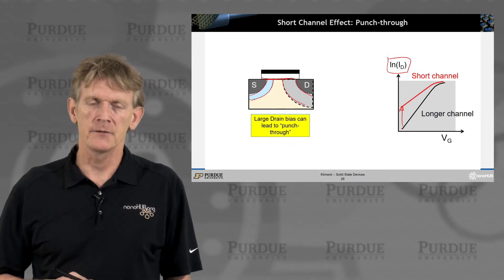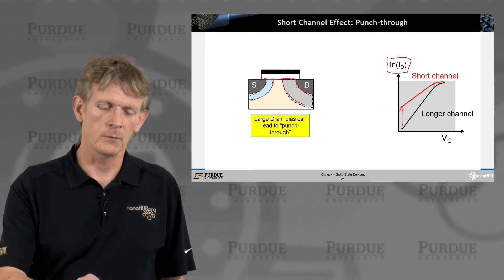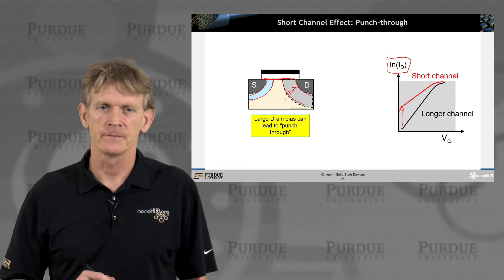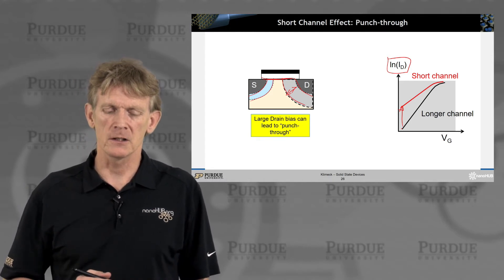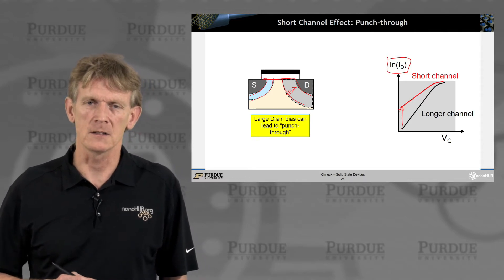If you have a large drain bias, so you apply even more voltage here, then you know by now that this depletion region is getting larger and larger. Eventually, you can lead to something like punch-through, like what we had studied in the BJT.